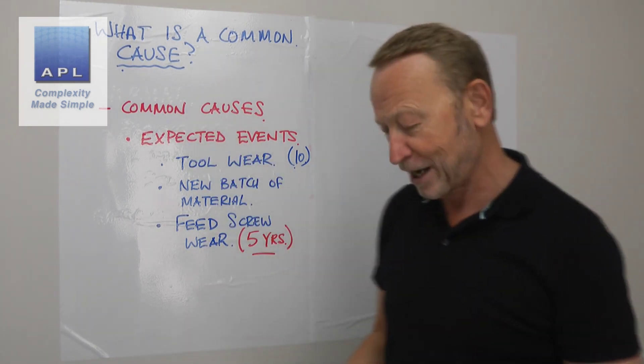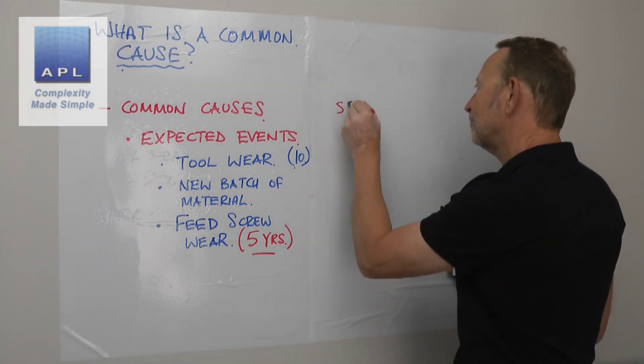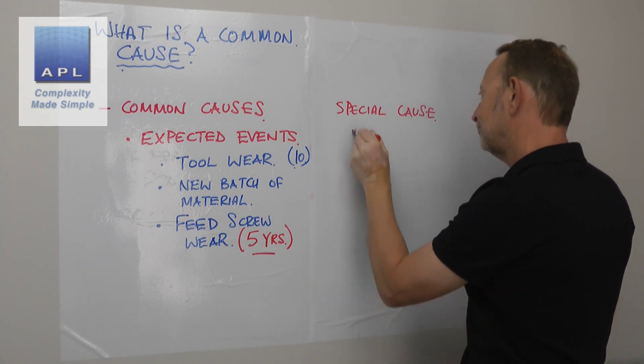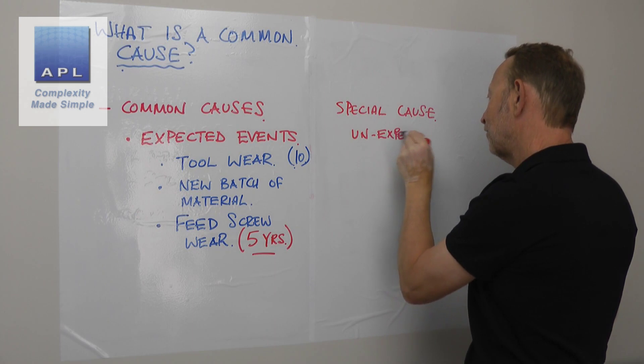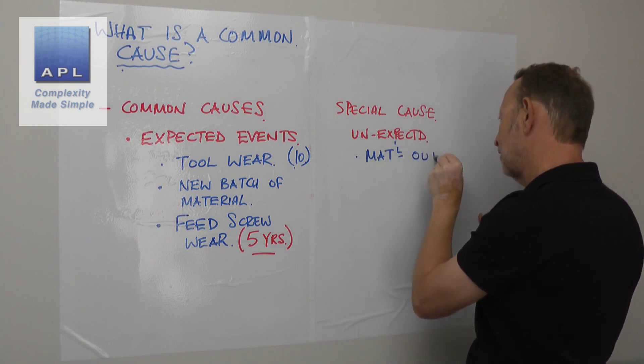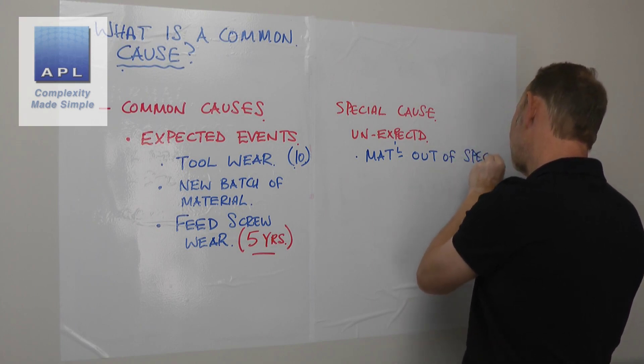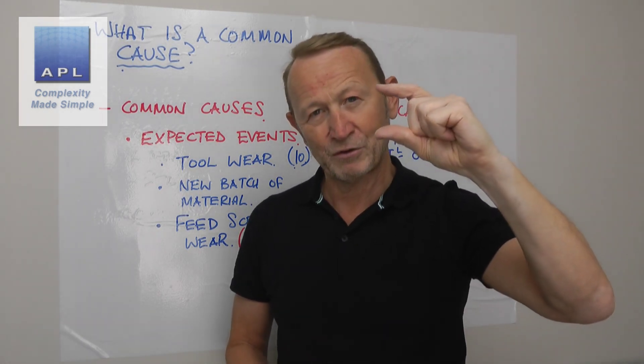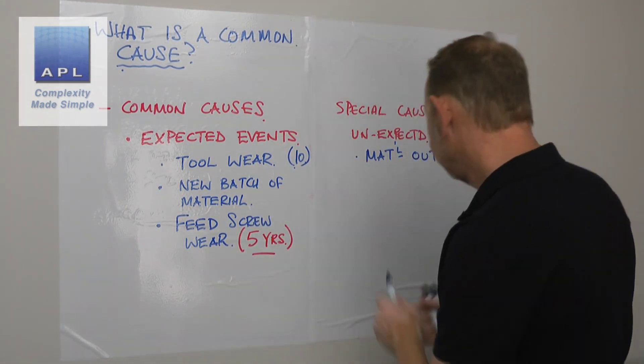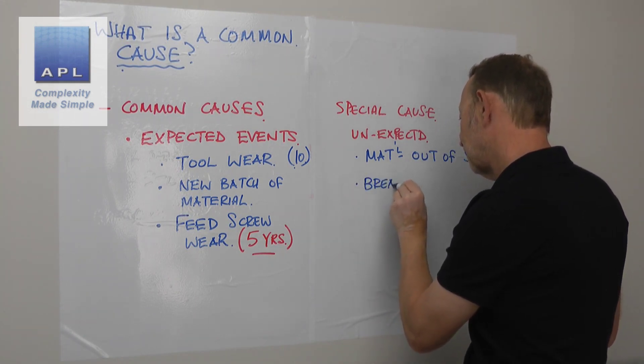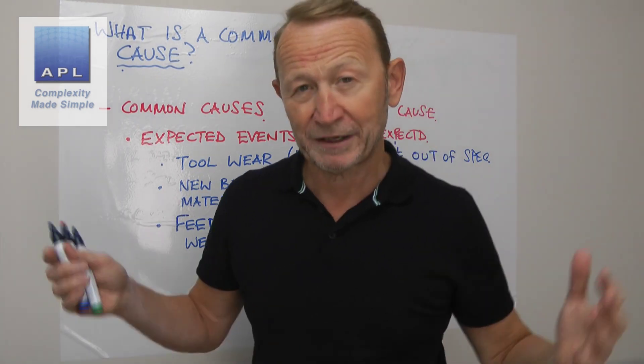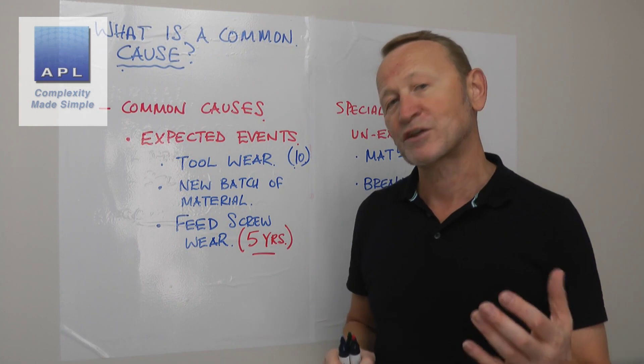Now what would a special cause be? Well, this would be an unexpected event. These are unexpected. An example of an unexpected event would be material out of spec. So you've agreed with the supplier to hit a tolerance window, so suddenly they deliver something by accident bang outside the tolerance - that would be a special cause to me. What else? Some kind of breakdown. So five axis machining center, let's say one of the bearings collapses, so the machine just goes bang. That would be a special cause. So these are unexpected events.